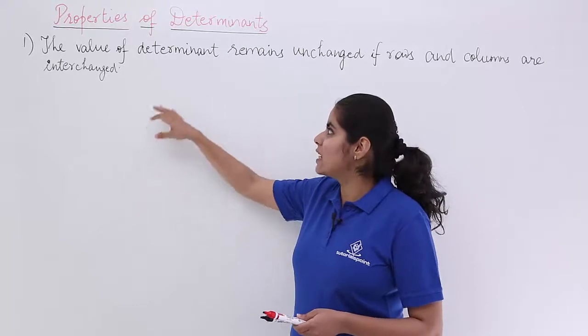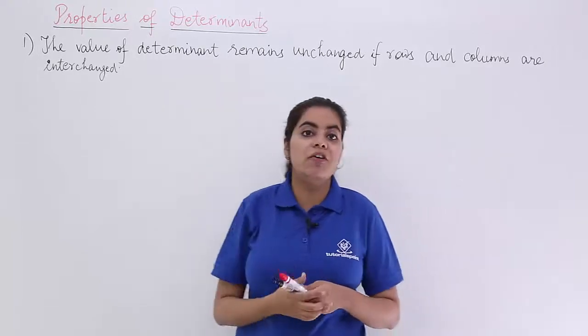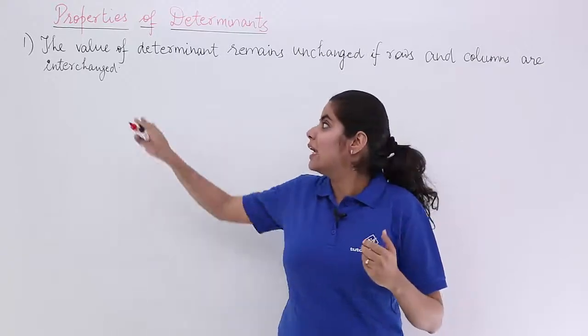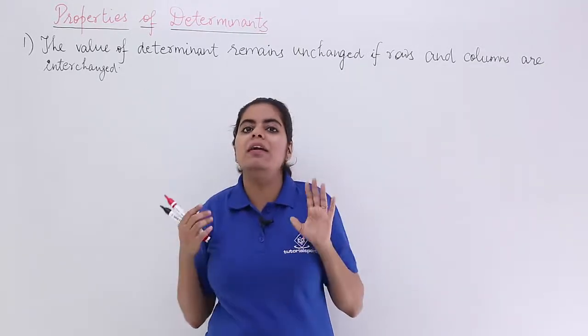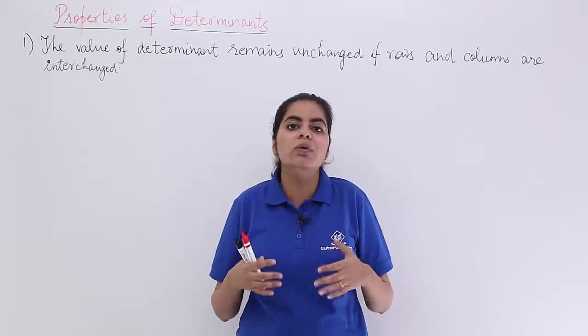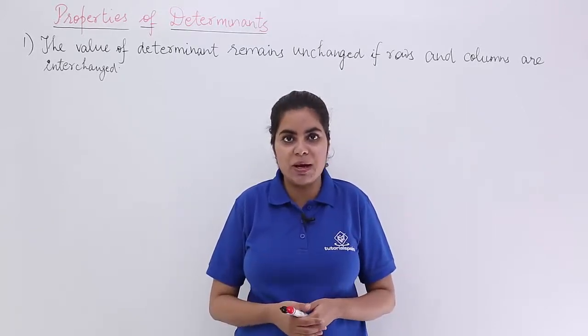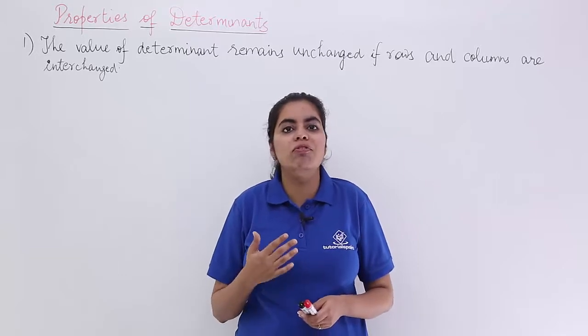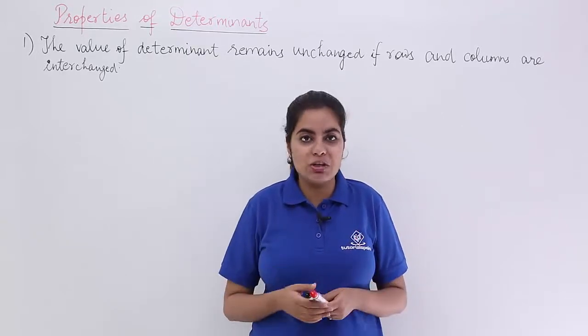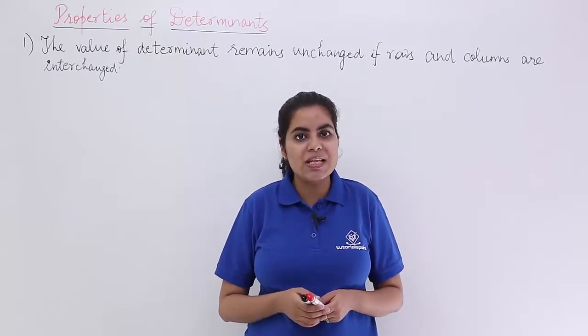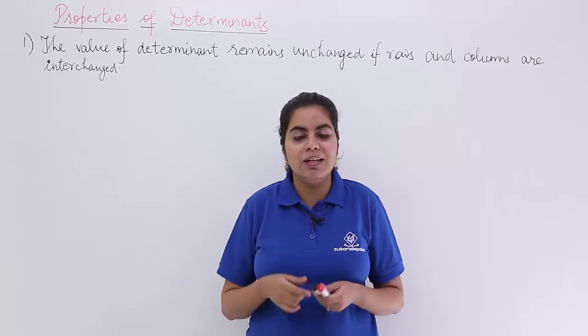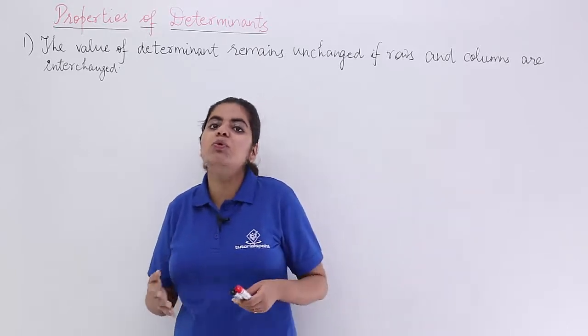The property says the value of determinant remains unchanged if rows and columns are interchanged. That means as in a matrix that we had, if we used to interchange the rows with columns, we would say it was the transpose of a matrix. Here also, if we change the rows and columns with each other in the case of determinant, the value of determinant does not change at all. Let's see how to prove this thing.